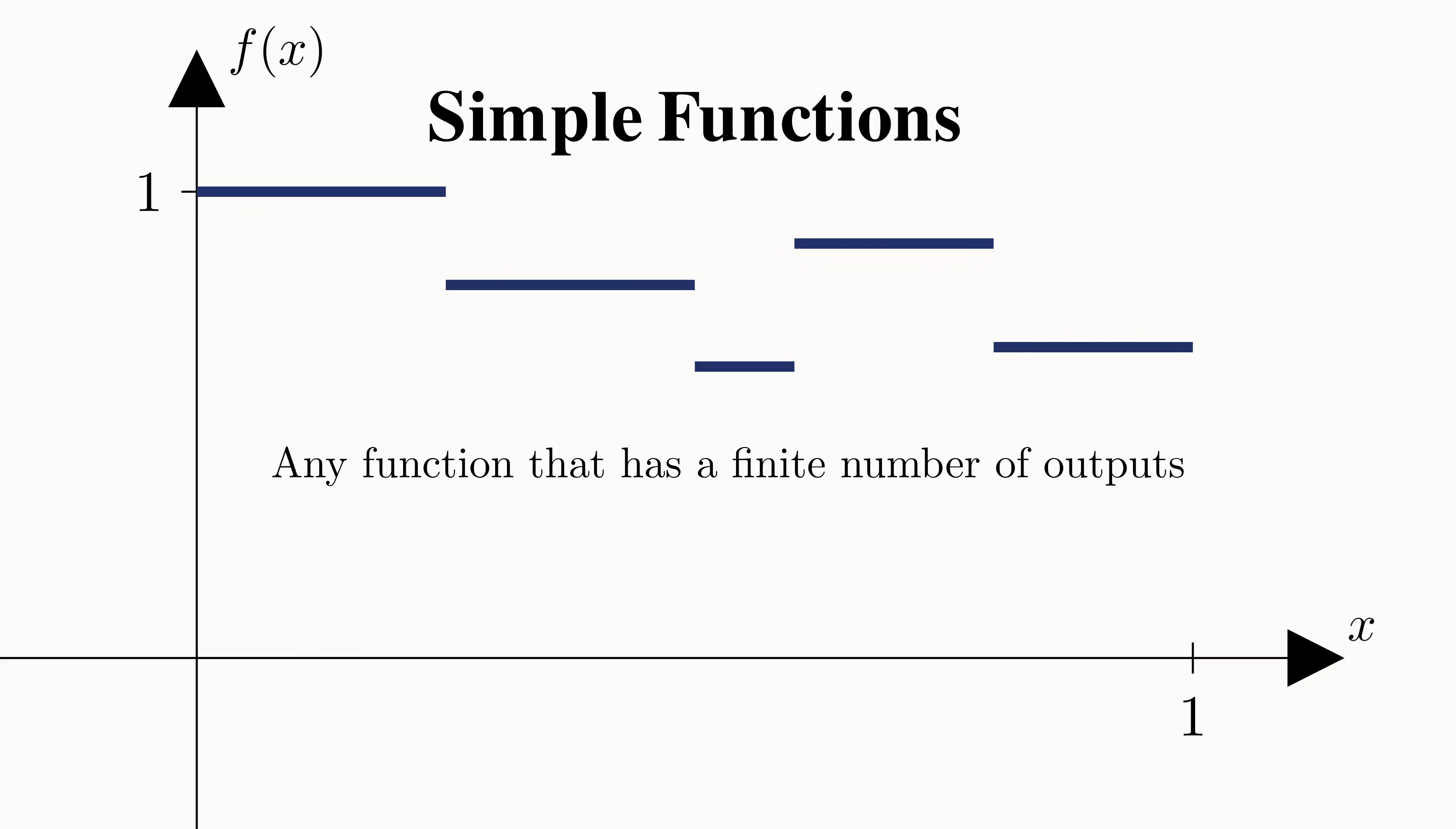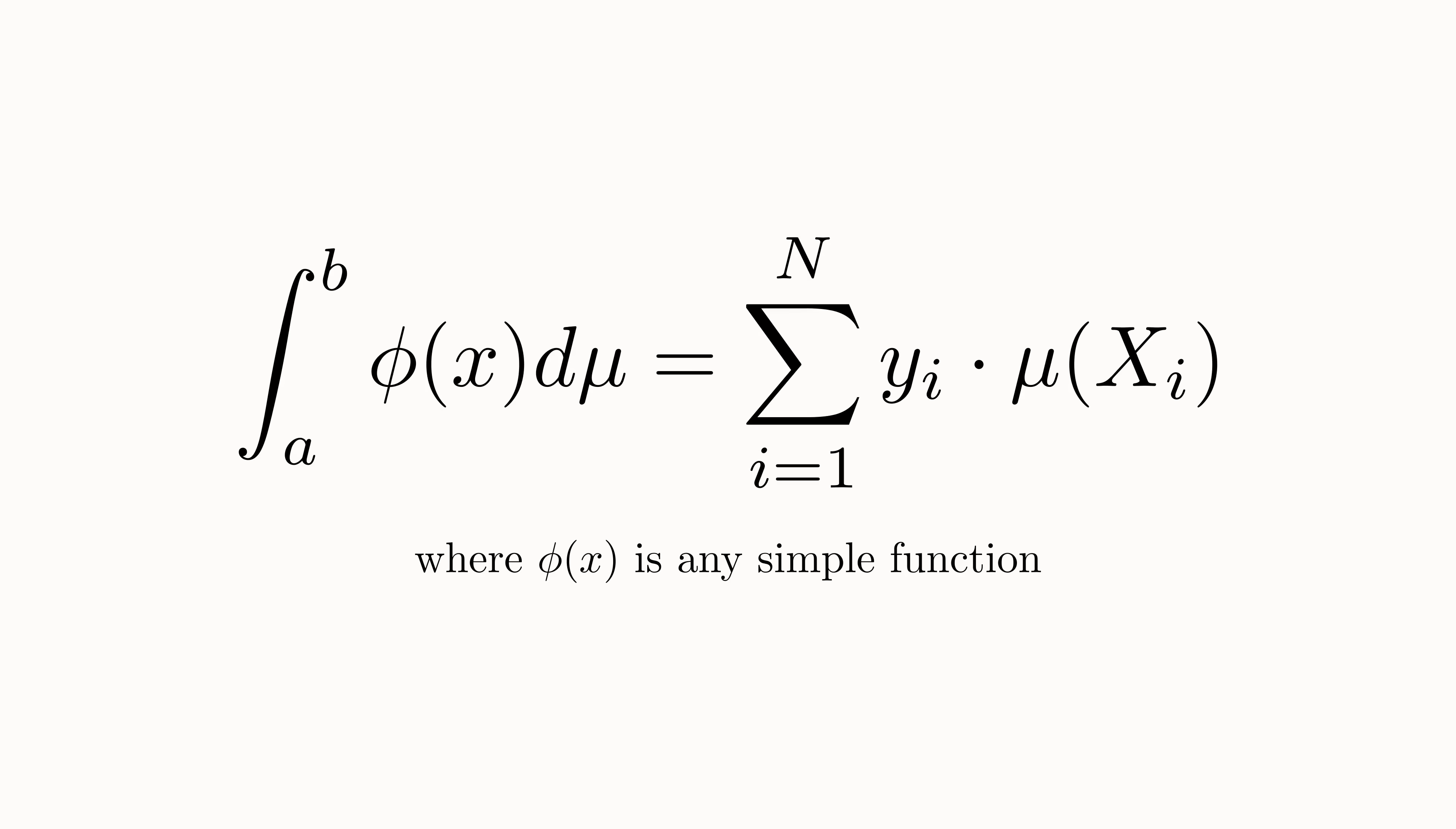We can then define the Lebesgue integral for a simple function over an interval from a to b as follows. We consider each value that the function takes, and multiply it by the length of the set that gives those values. We then take the sum over all these values, and this gives us the Lebesgue integral of a simple function.